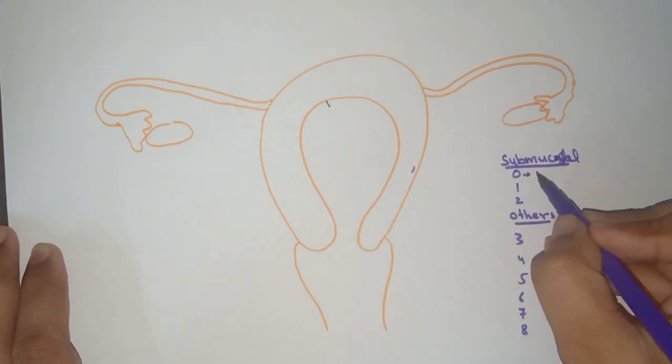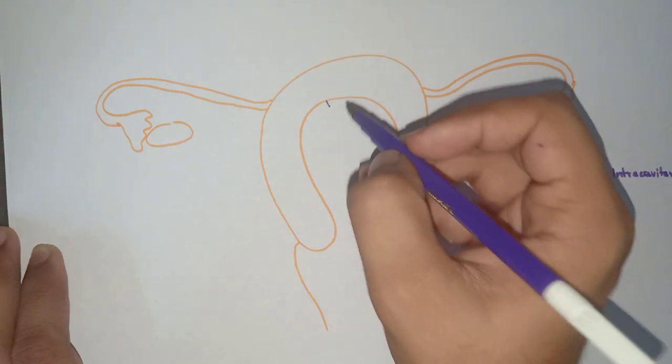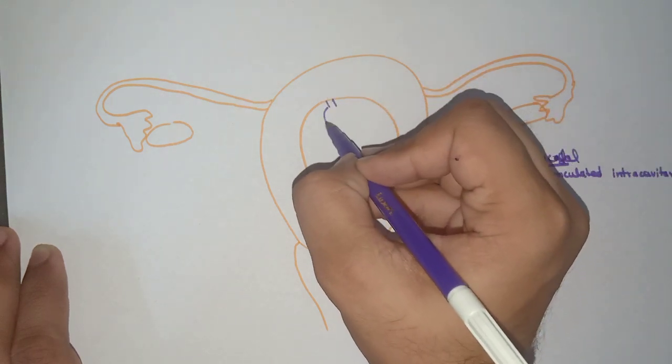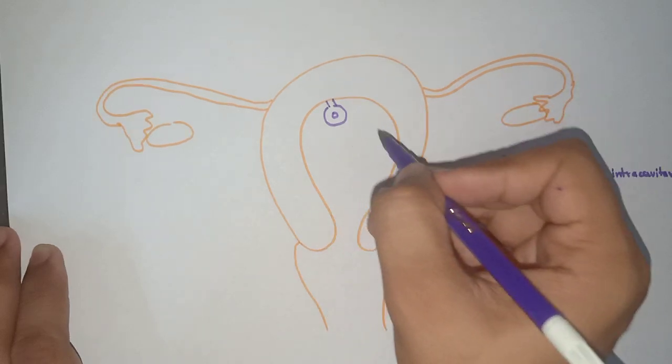Type 0 is pedunculated intracavity. This is pedunculated and intracavity - it is present within the cavity. This is the zero classification.